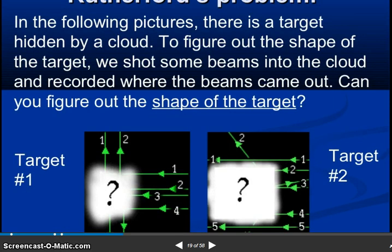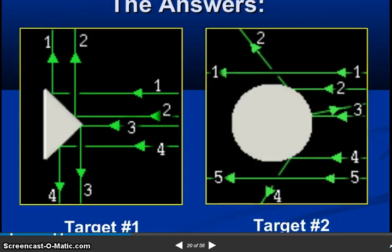So Rutherford's problem. In the following picture, there is a target hidden by a cloud. To figure out the shape of the target, we shot some beams into the cloud and recorded where the beams came out. Can you figure out the shape of the target? You see the target and you can see the situation. So target 1 and target 2.